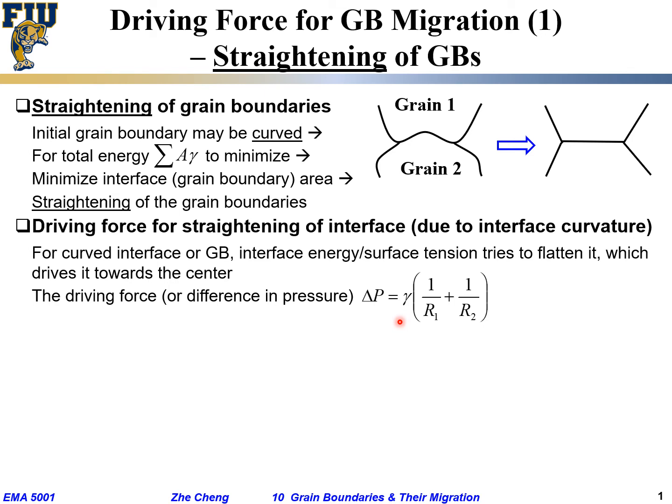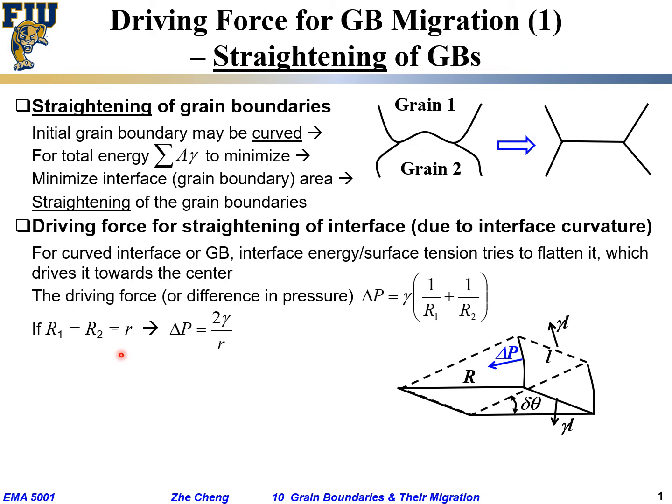Gamma is the interfacial or surface energy. R1 and R2 are the radii of curvature along the two principal directions. For the simple case of a spherical surface, r1 and r2 are the same, so delta P equals 2 gamma over r. Here gamma is the grain boundary energy and r is the local radius of curvature. You may ask: how exactly do we get this relationship?